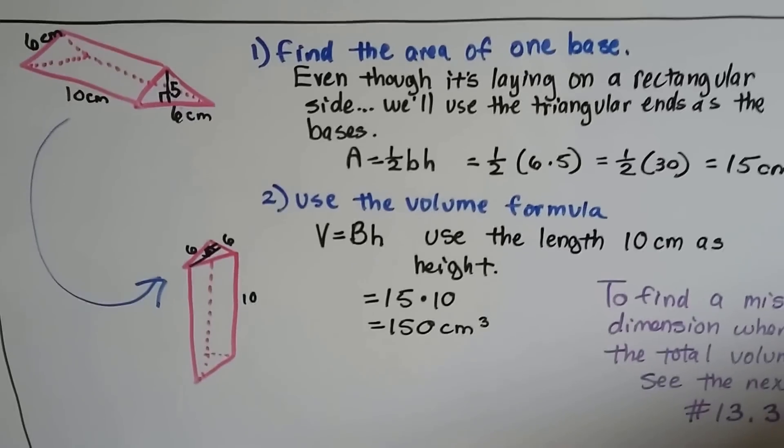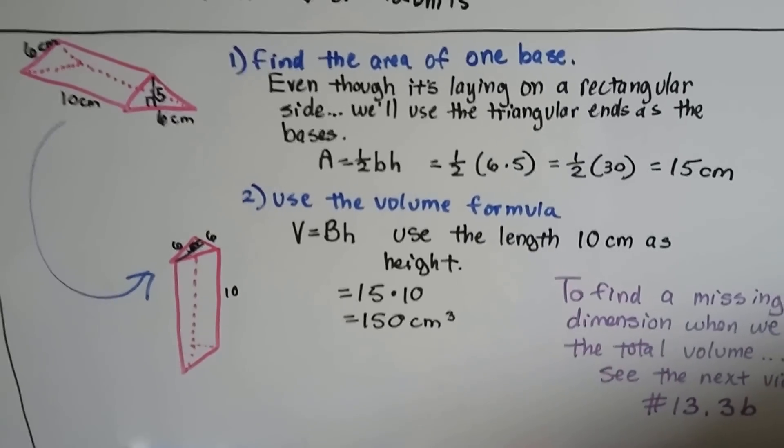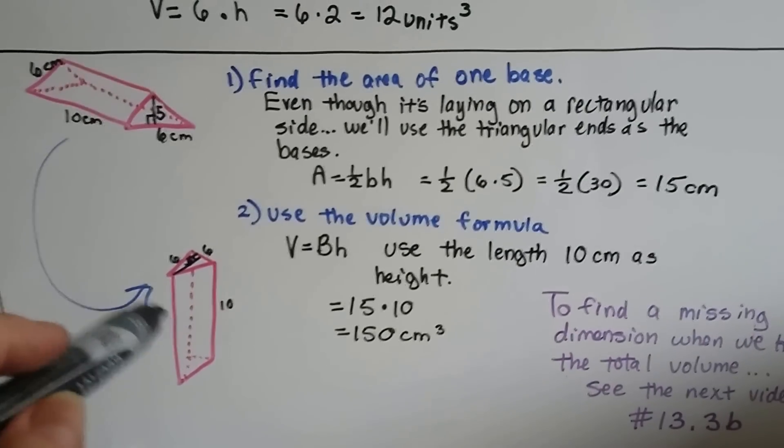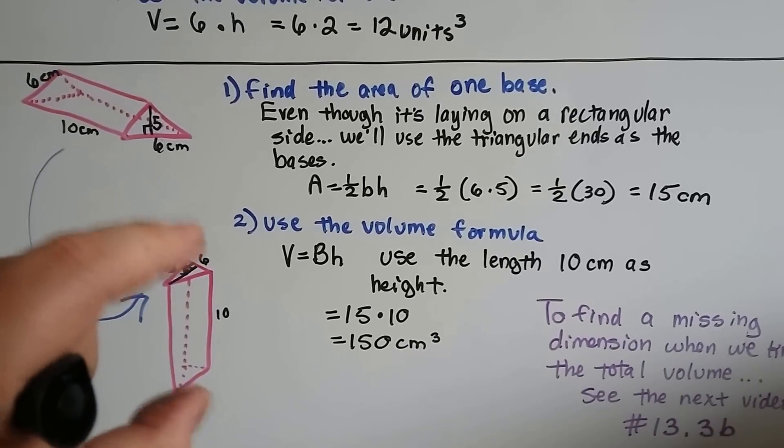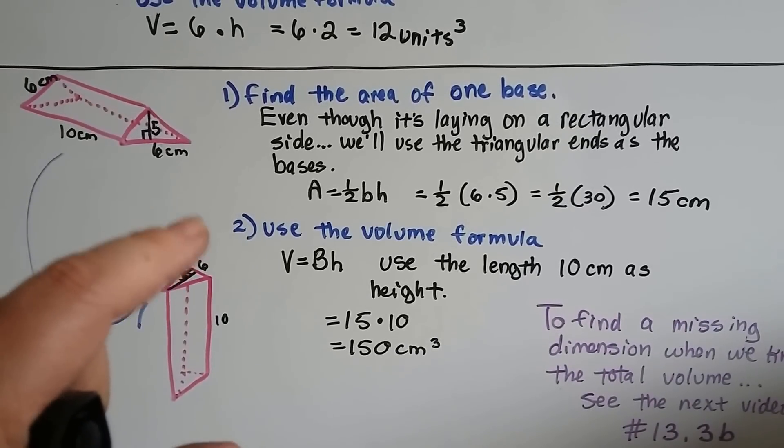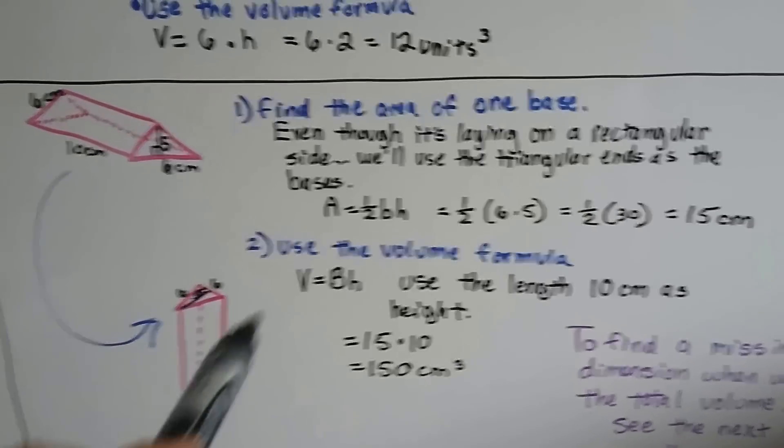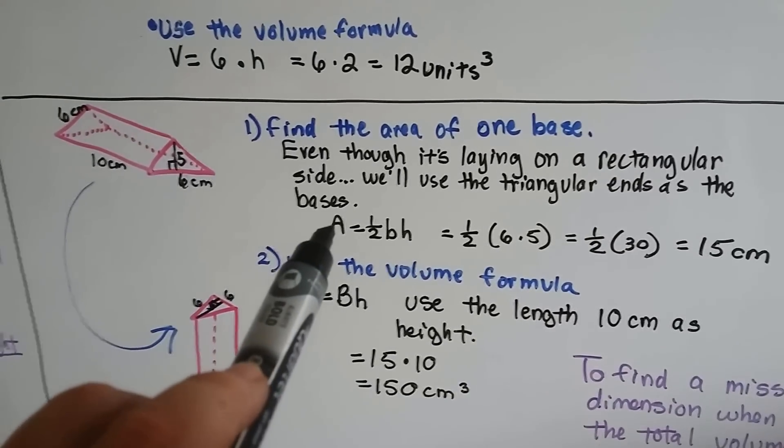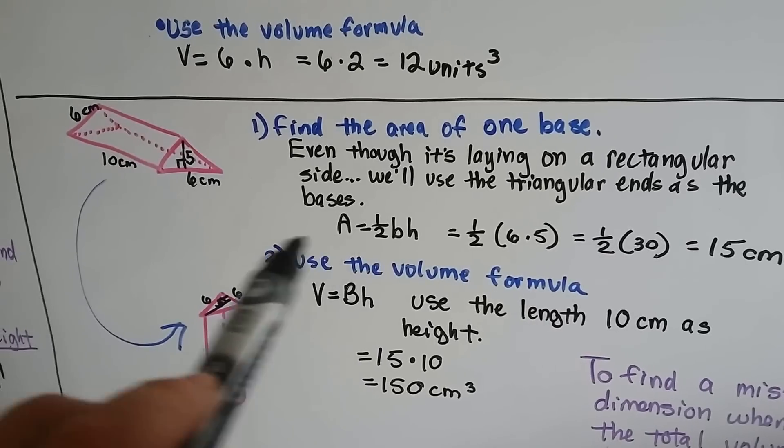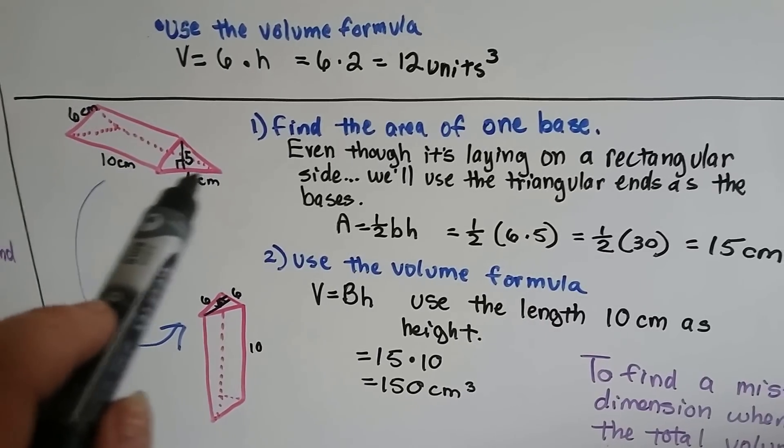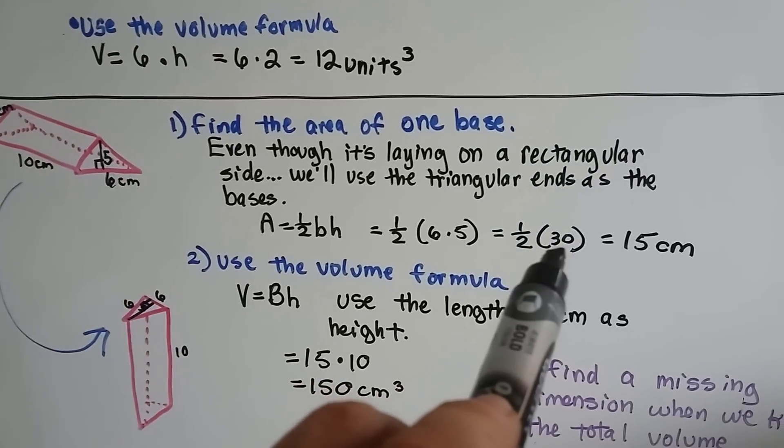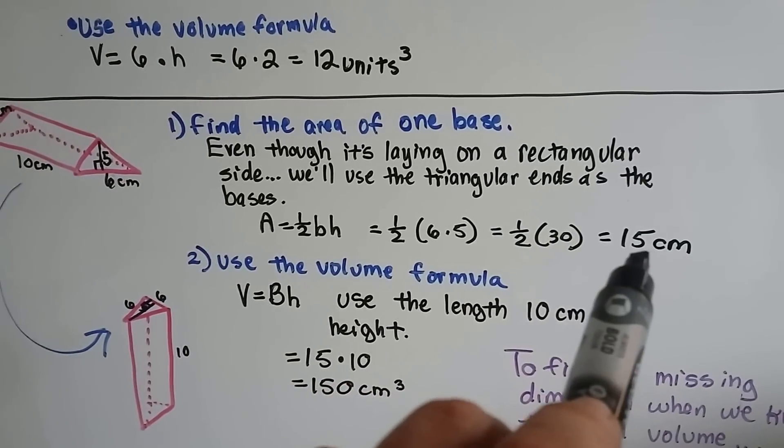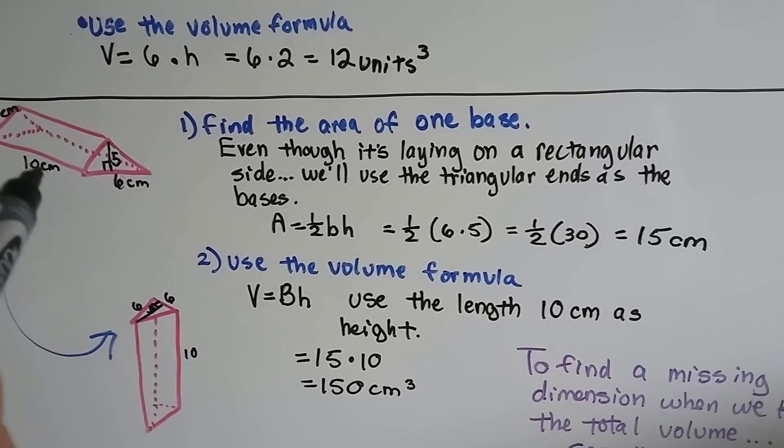For this one, it looks like it's laying on its side. We find the area of one base, and even though it's laying on a rectangular side, we'll use the top and bottom triangles as base 1 and base 2. Area is ½·b·h. We can see the base is 6 and the height is 5, so 6 times 5 is 30. Half of 30 is 15 centimeters.